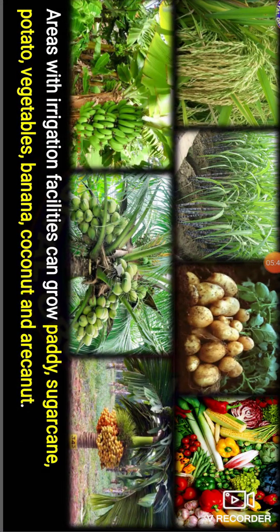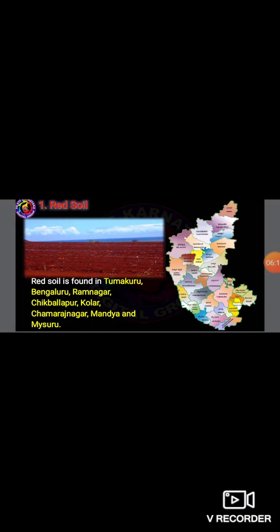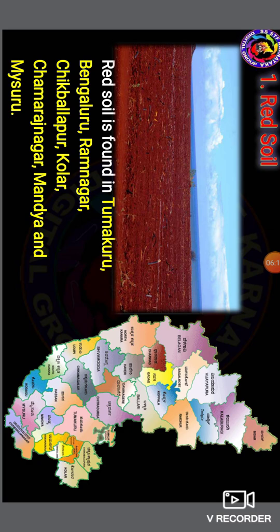Red soil is found especially in the districts of Tumkur, Bengaluru, Ramanagara, Chikkaballapura, Kolar, Chamarajanagar, Mandya, and Mysore. These southern districts of Karnataka are largely covered by red soil.